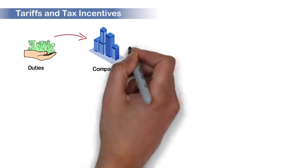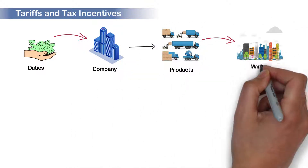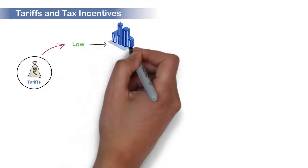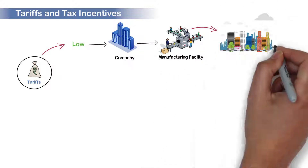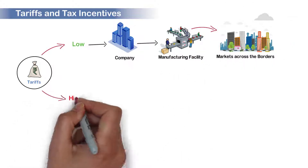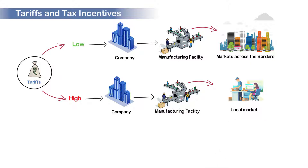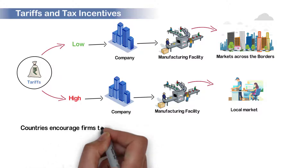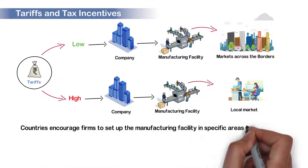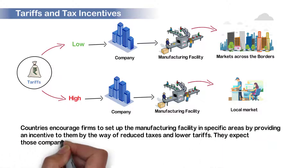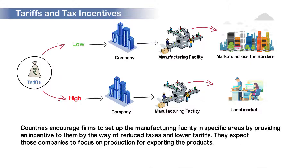The impact of macroeconomic factors comes next. Tariffs and tax incentives are important factors under this. Duties which have to be paid by a company when the products produced by them are moved to the market across the city, state, or borders is known as tariffs. When the tariff is low in a country, the company sets up the facility to manufacture the products to serve the markets across the borders. But if the tariff is high in a country, companies set up manufacturing plants within the country to serve the local market to save on duties. Countries encourage firms to set up the manufacturing facility in specific areas by providing an incentive by way of reduced taxes and lower tariffs. They expect those companies to focus on production for exporting the products.